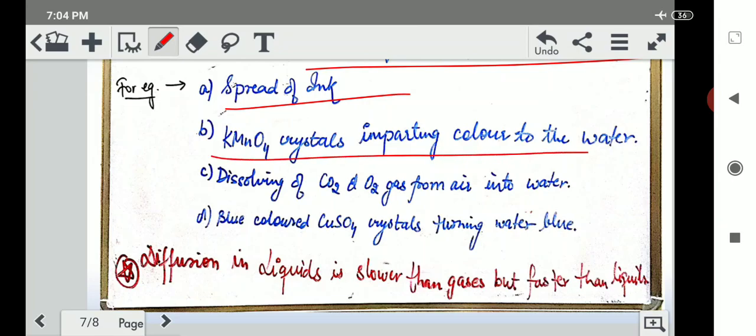KMNO4 crystals. We had seen how those crystals have given purple color to the water. It happened in the same way because particles spread from one way to another. But this is not as fast and quick like in gases; it spreads in a minute. Dissolving of carbon dioxide and oxygen gas from air into water. Blue colored copper sulfate crystals turning water blue. This experiment we have also studied in our previous videos. How copper sulfate crystals were turning blue, they turned the water blue into which they were added.